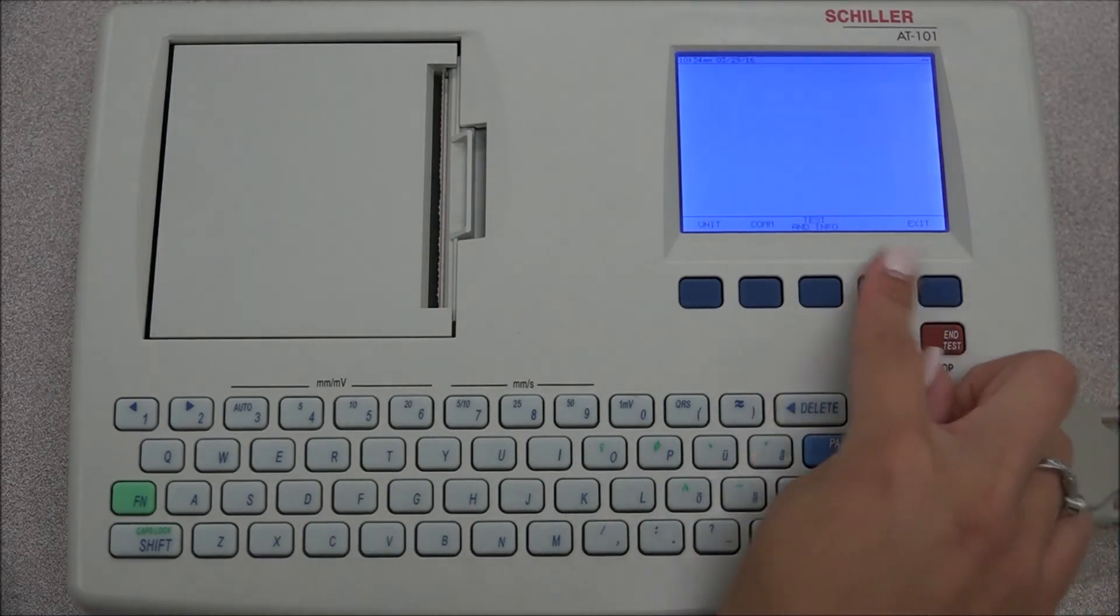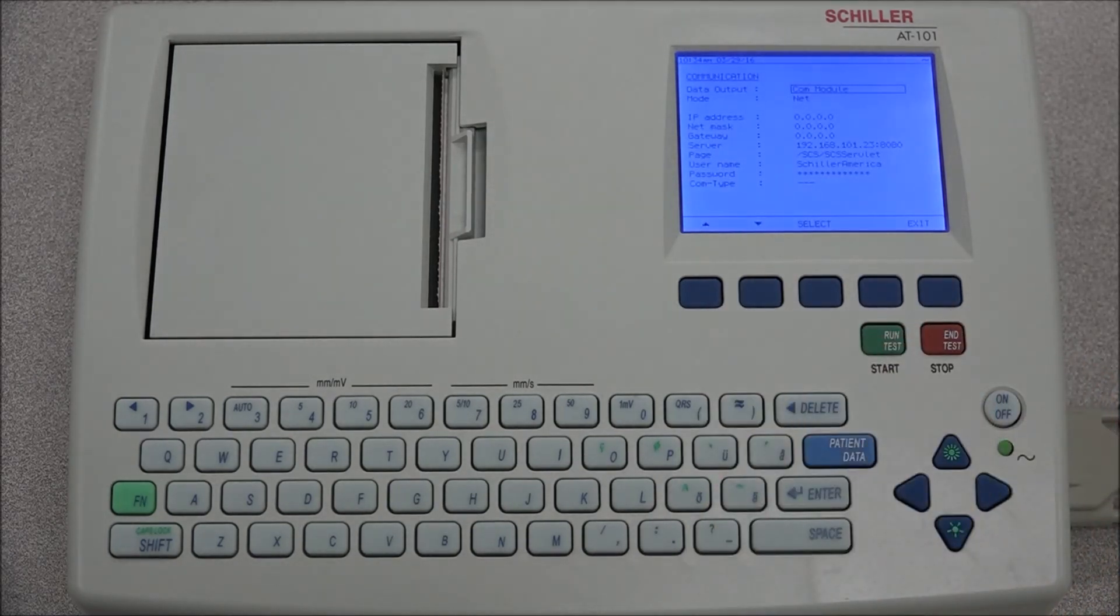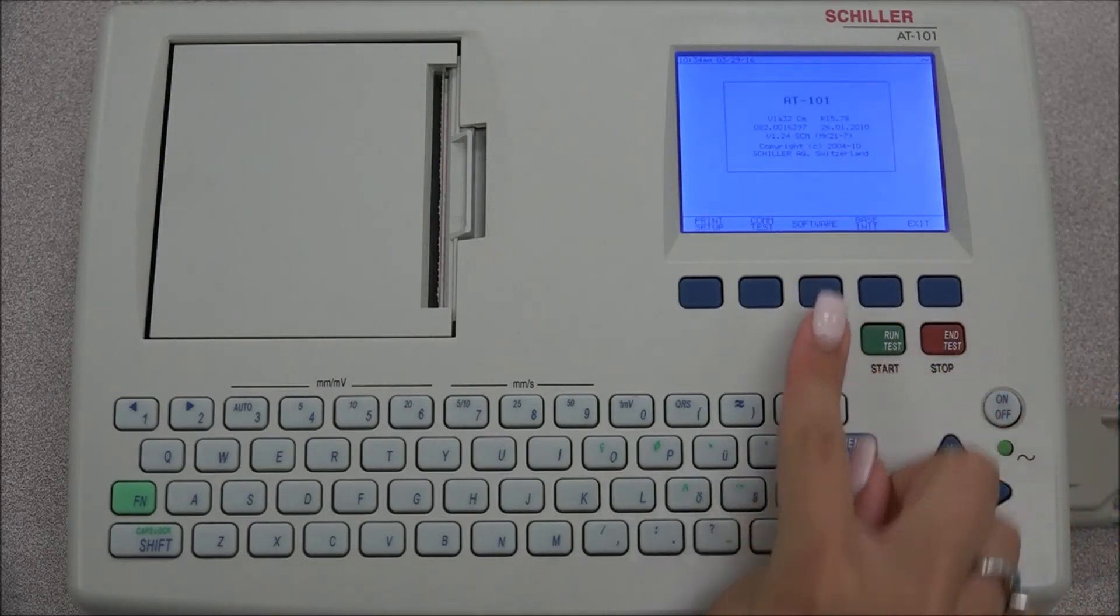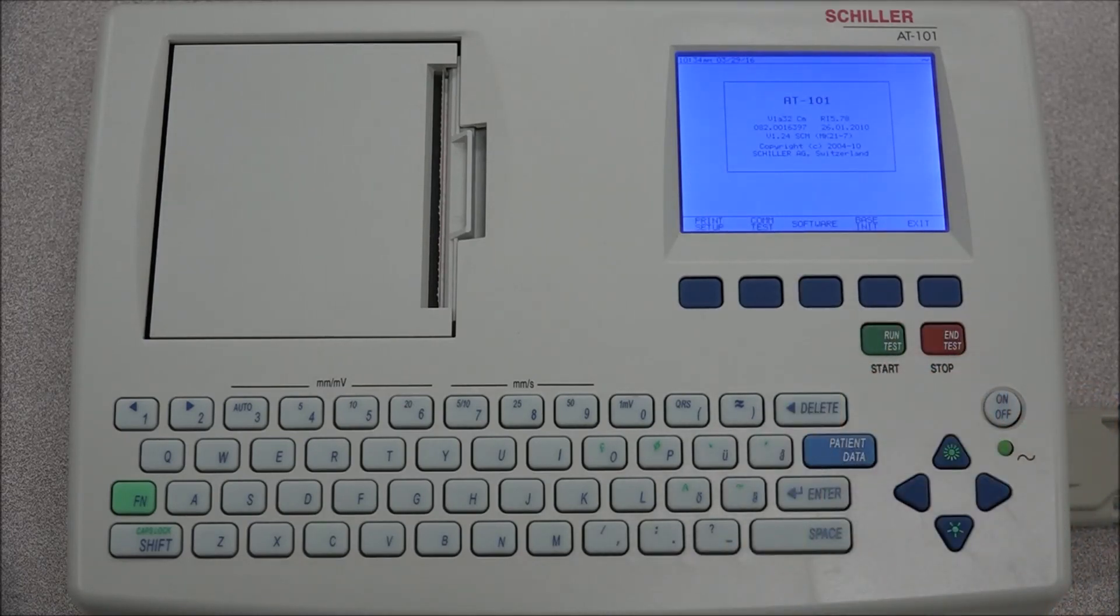Under communications, all settings regarding the communication parameters are set. And under test and information, a code of the options installed is displayed after the software version.